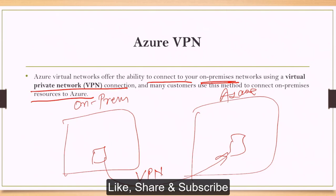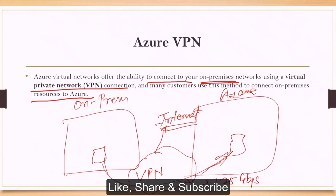There is a limitation here: your connection is going through the internet. This is very important to understand, especially for the exam. In the VPN case, our data or traffic travels through the internet, but it is secure — there is a tunnel and the data is protected. However, the maximum speed we can get is 1.25 Gbps.